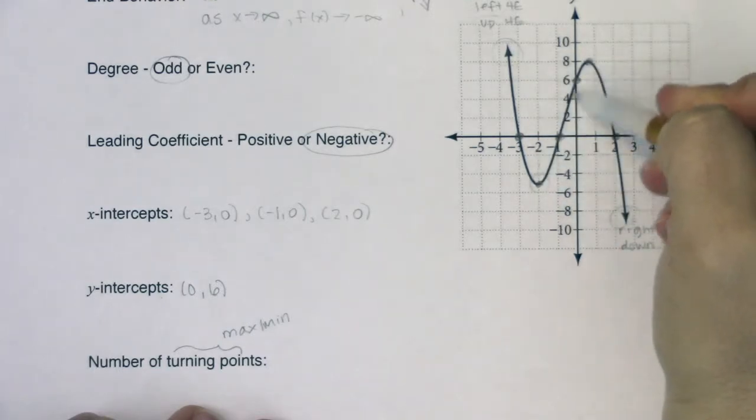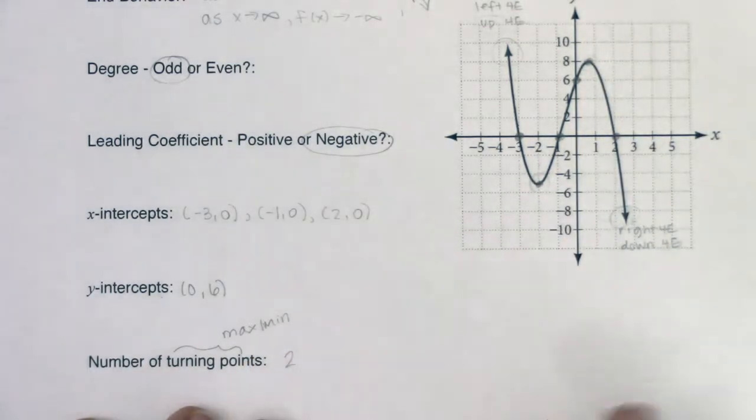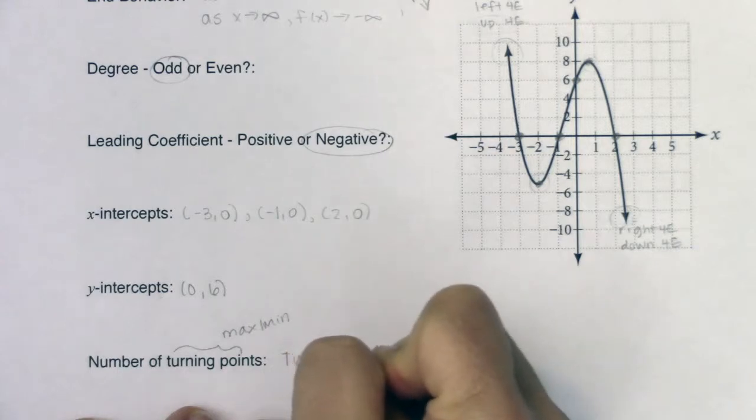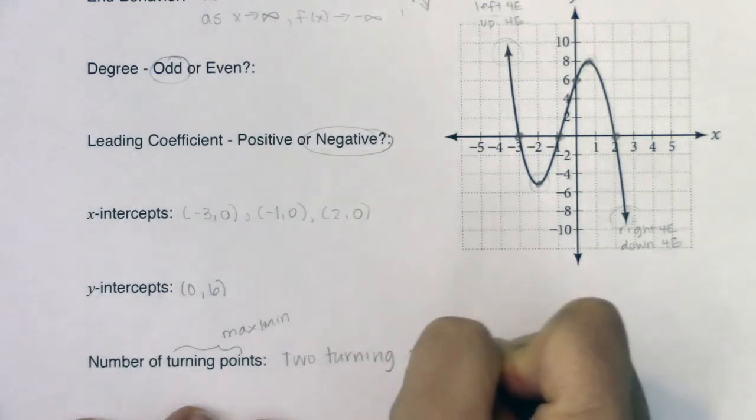Here, my function changes from increasing to decreasing. The function turns at this max. So I have two turning points. And actually, I'm going to write it out in words just so we're clearer on that. Two turning points.